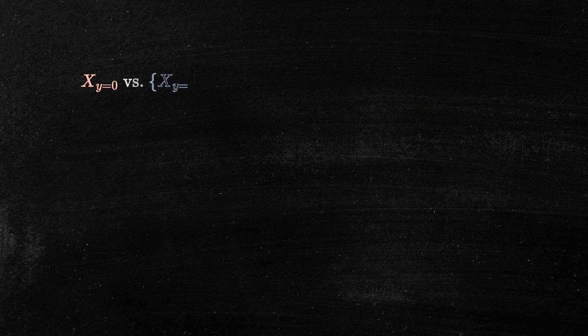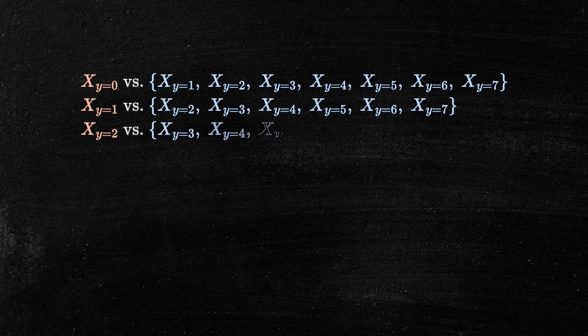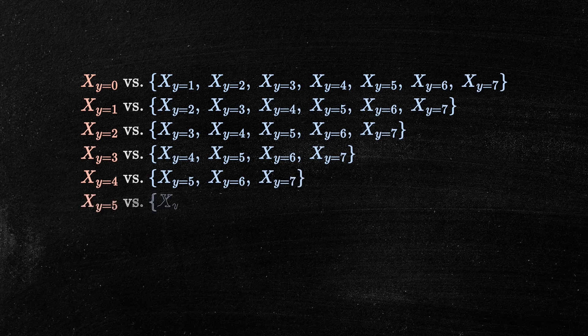For instance, one perceptron distinguishes samples labeled as zero from those labeled as one. Another handles samples labeled as zero versus samples labeled as two, and so on. Considering our eight possible labels, this approach creates a total of 28 perceptrons.